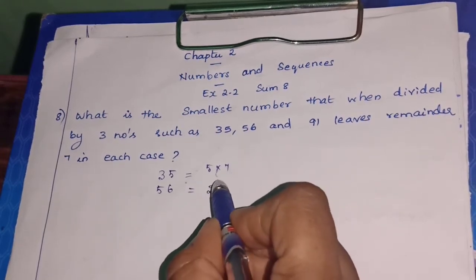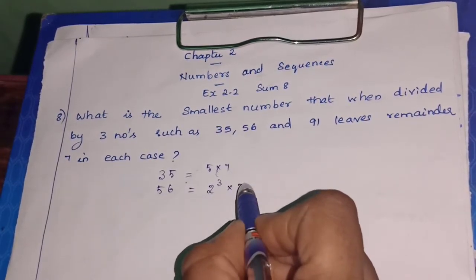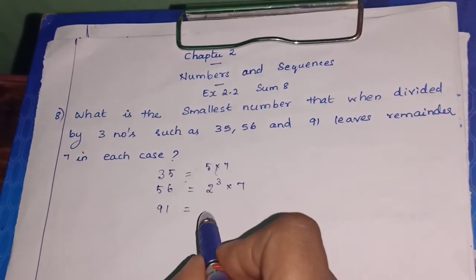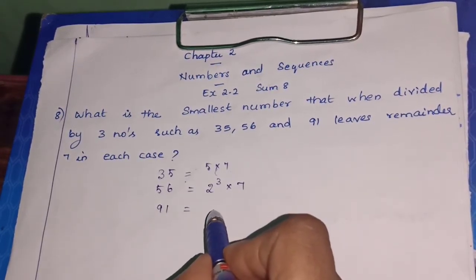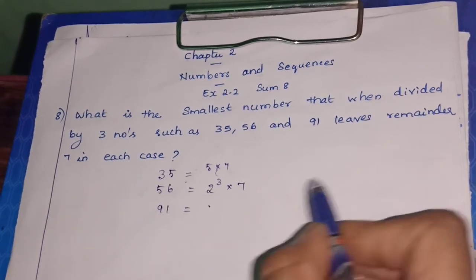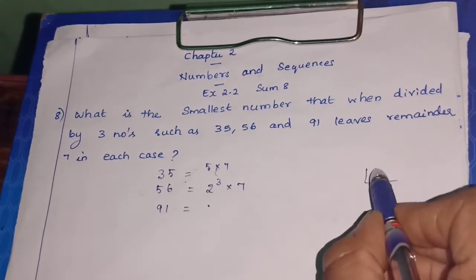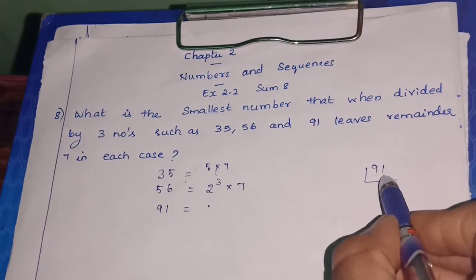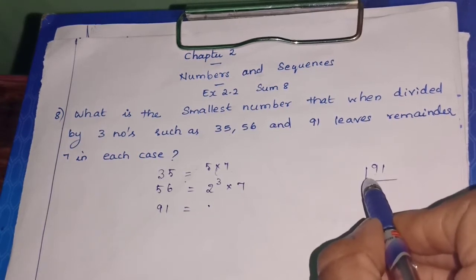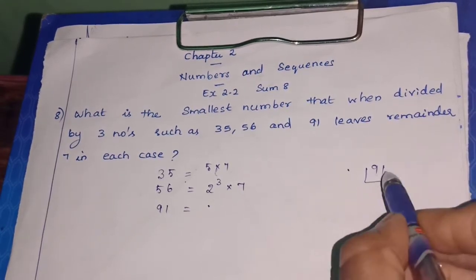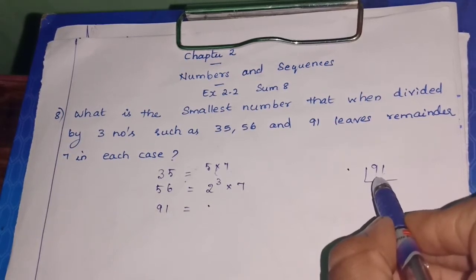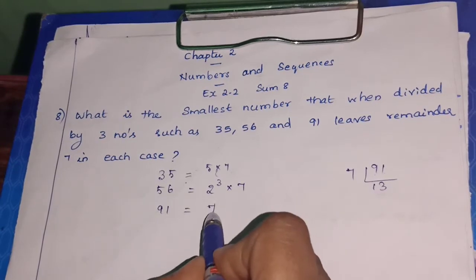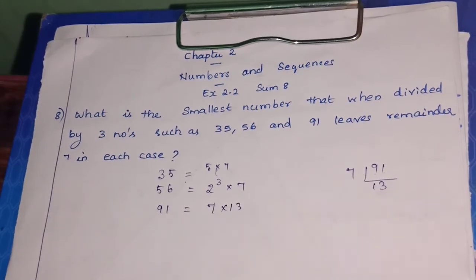So 56 = 2³ × 7. Next, 91 — how will you express it? Let's check which multiplication table 91 belongs to. Not the 2 table, not the 3 table. It comes in the 7 table: 7 × 13 = 91. So 7 × 13 is the only possibility for 91.